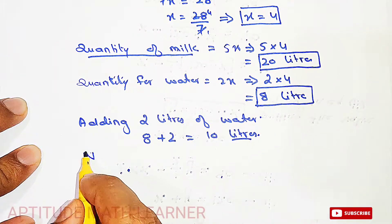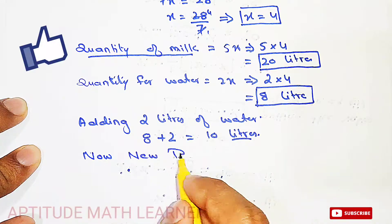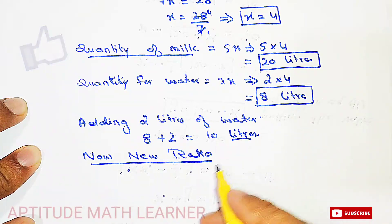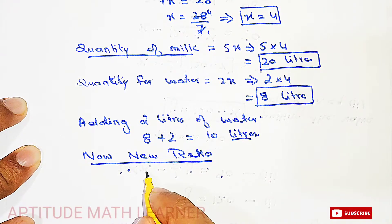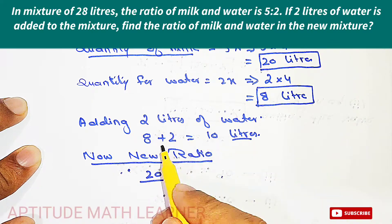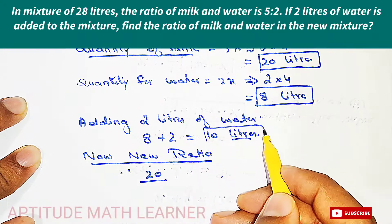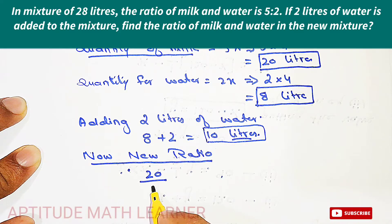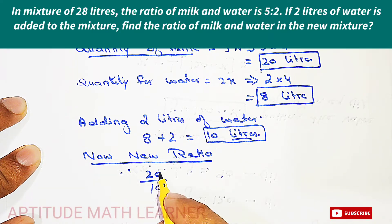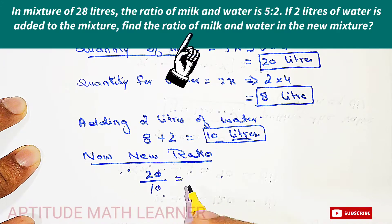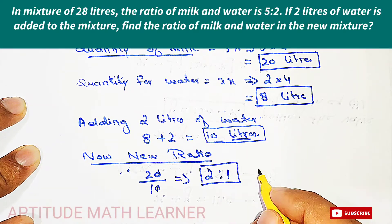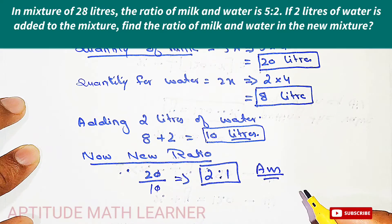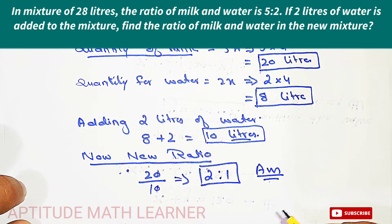The new ratio becomes: milk is 20 liters and after adding 2 liters of water we have 10 liters. So the new ratio is 20:10. Cancelling zeros, we get 2:1. This is our new ratio and our final answer. I hope you have understood the question — thank you very much.